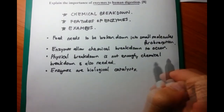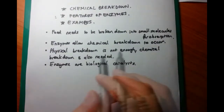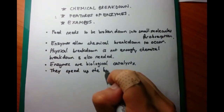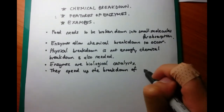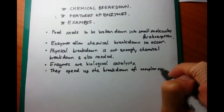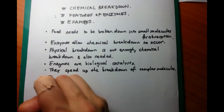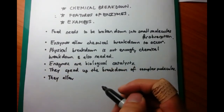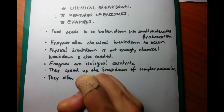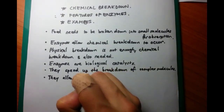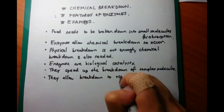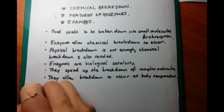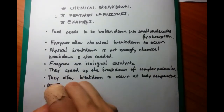Enzymes speed up the breakdown of complex molecules into simpler molecules. Because of this, they allow the breakdown of different food molecules at body temperature. One way of breaking down things is to heat them up — that's why you cook your food. You're essentially breaking down the complex molecules in a steak and turning them into simpler molecules.